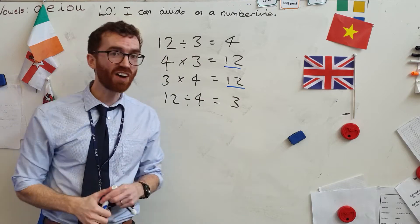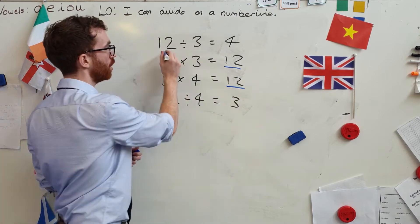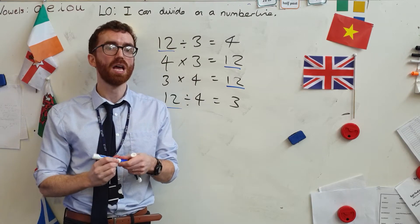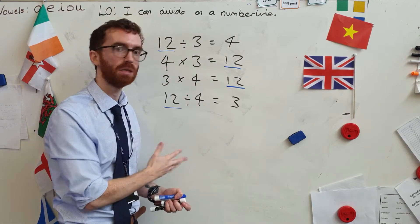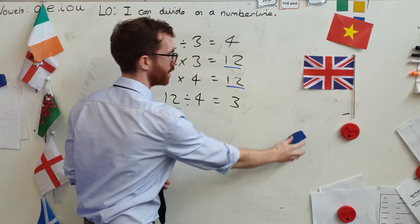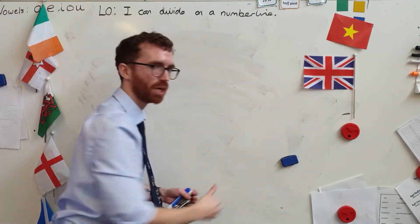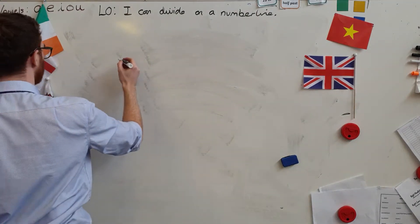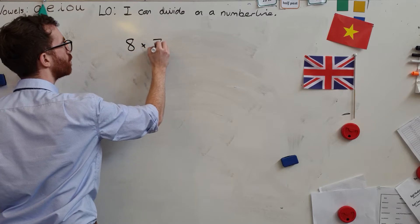When I'm multiplying, the biggest number is always going to be at the end, because when I multiply a number it gets larger — so my answer is always the biggest amount. When I'm dividing, I start with the biggest amount. Whenever I'm dividing, I'm starting with the biggest amount and seeing how much of a number there is in that number. I've got a quick challenge for you now — I'm going to put up a few numbers and I'd like you to tell me what else you know.